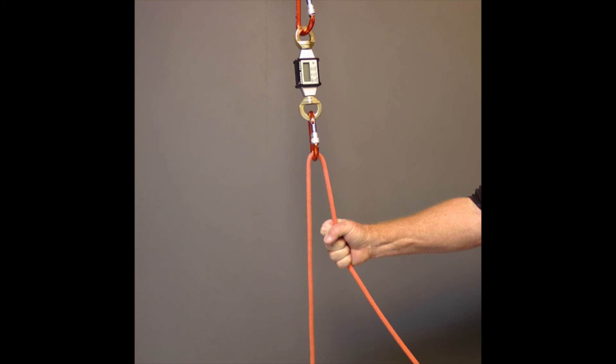A carabiner is not an efficient pulley. When pulling down on the rope, there was 34 pounds on the anchor because I needed to pull hard enough to lift the load plus overcome a greater amount of friction.